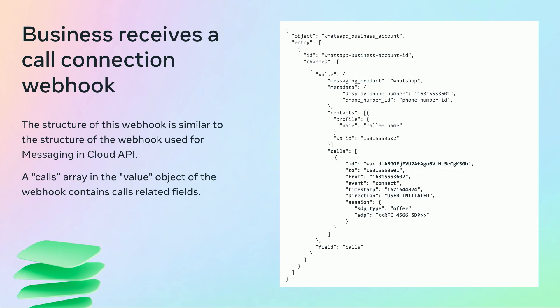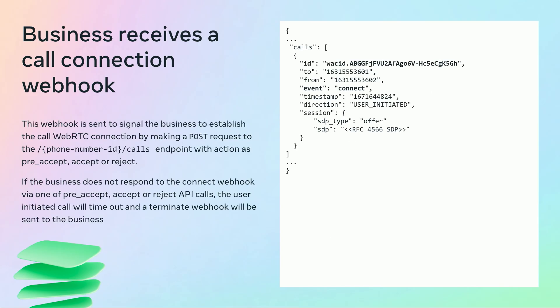A calls array within the value object of the webhook will contain the call-related fields. This webhook is the signal for the business to establish a WebRTC connection by making a POST request to the slash phone_number_id slash calls endpoint, with the action parameter set to either preaccept, accept, or reject. If the business does not respond to the connect webhook, the user-initiated call will timeout and a terminate webhook will be sent. The webhook contains a call identifier in the ID parameter, which the business must store for subsequent API calls.